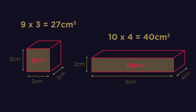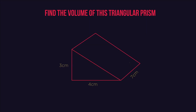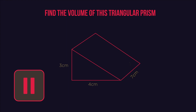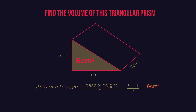Let's try something a little more challenging — let's find the volume of a triangular prism. Find the cross-sectional area of the triangle first and then multiply by the depth. Pause the video and work out the volume. Using the area of a triangle: base times height divided by 2, this gives a cross-sectional area of 6 centimeters squared. Now multiply that by the depth, so 6 times 7 is 42 centimeters cubed.